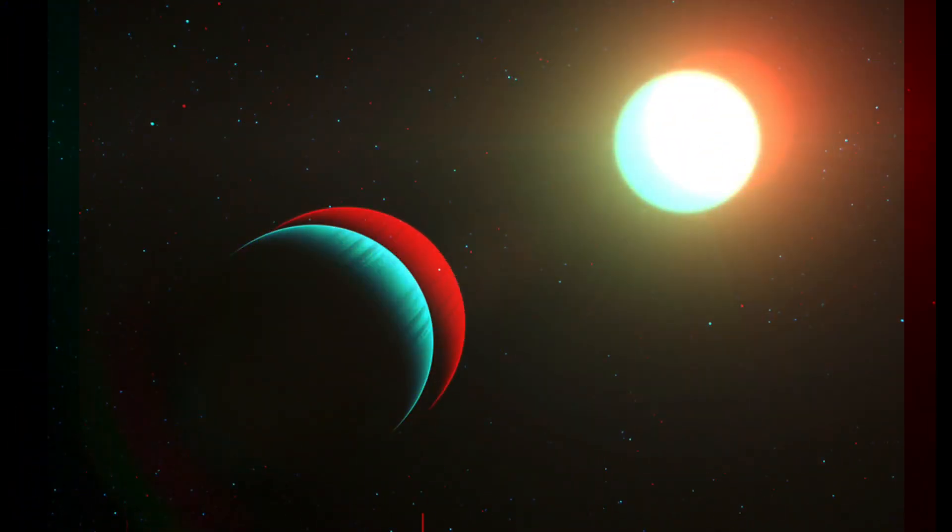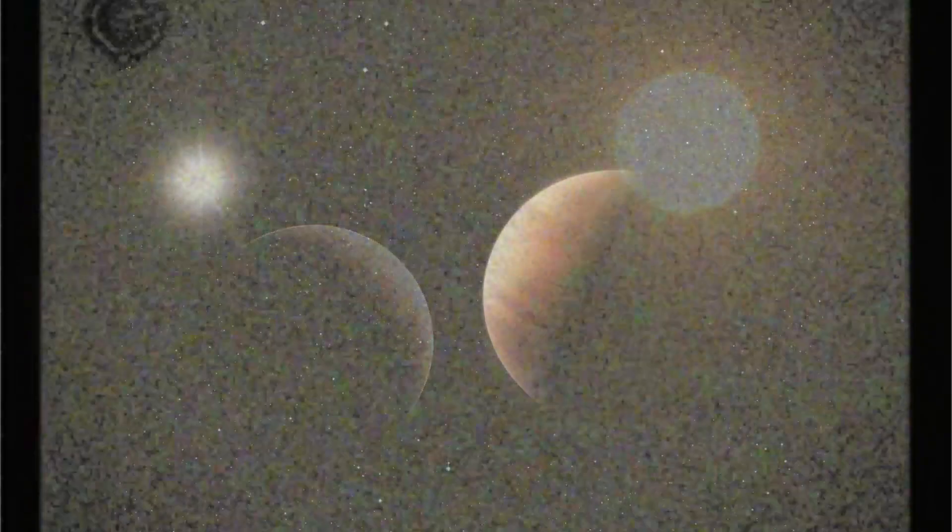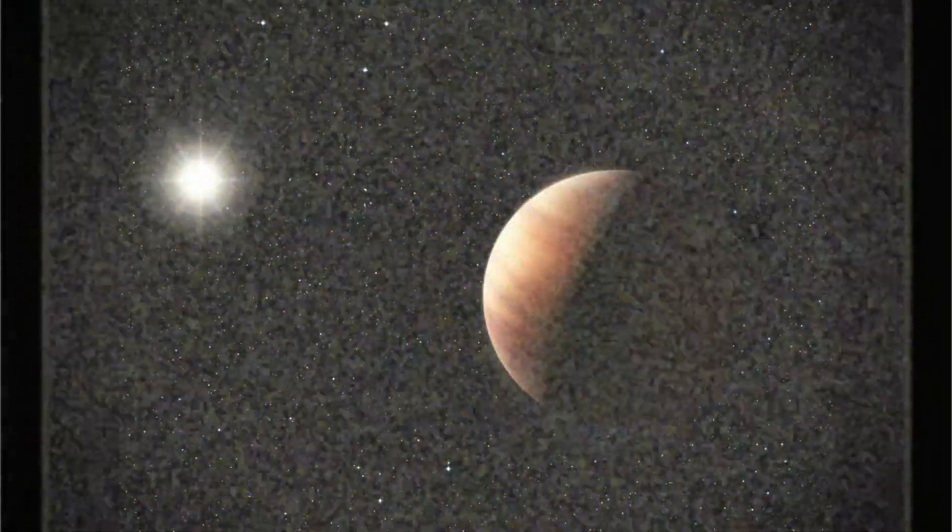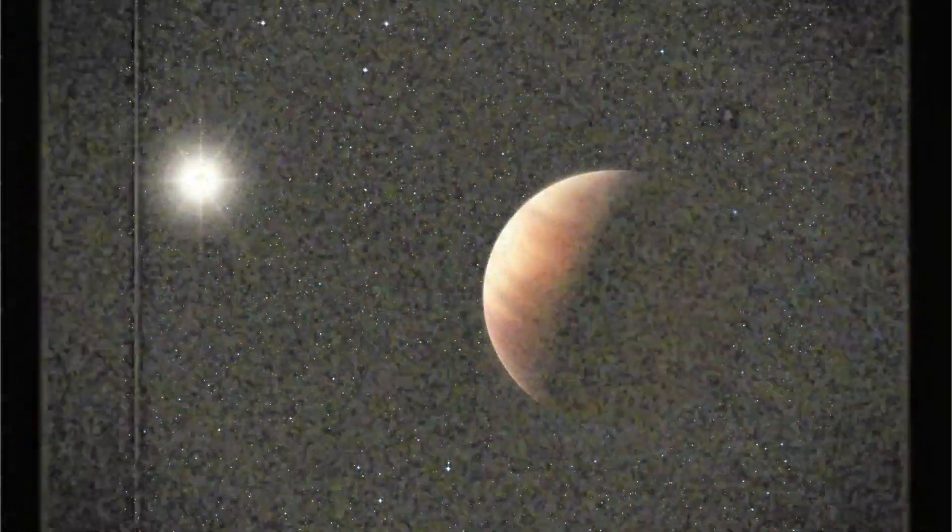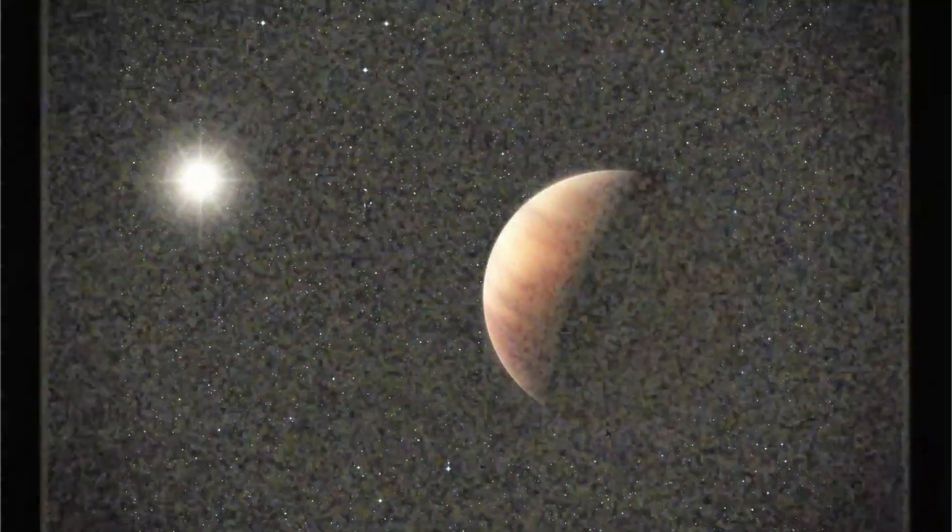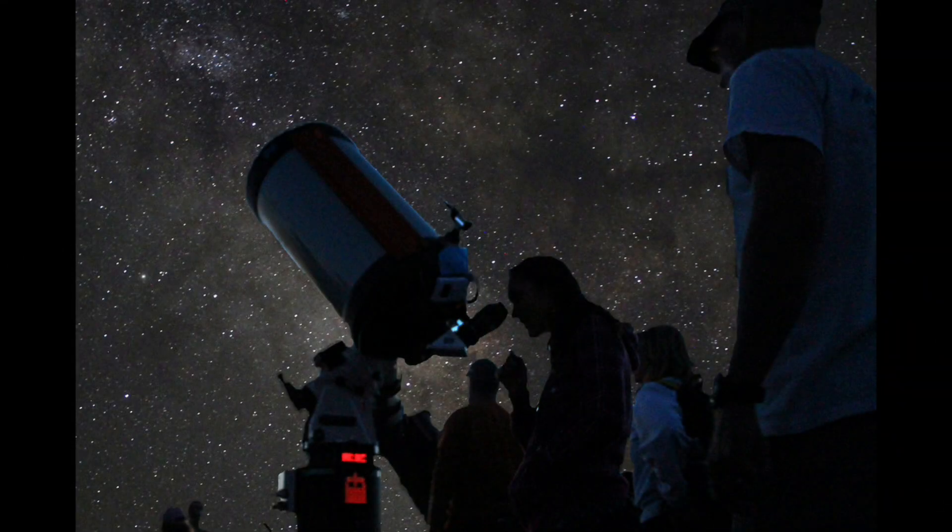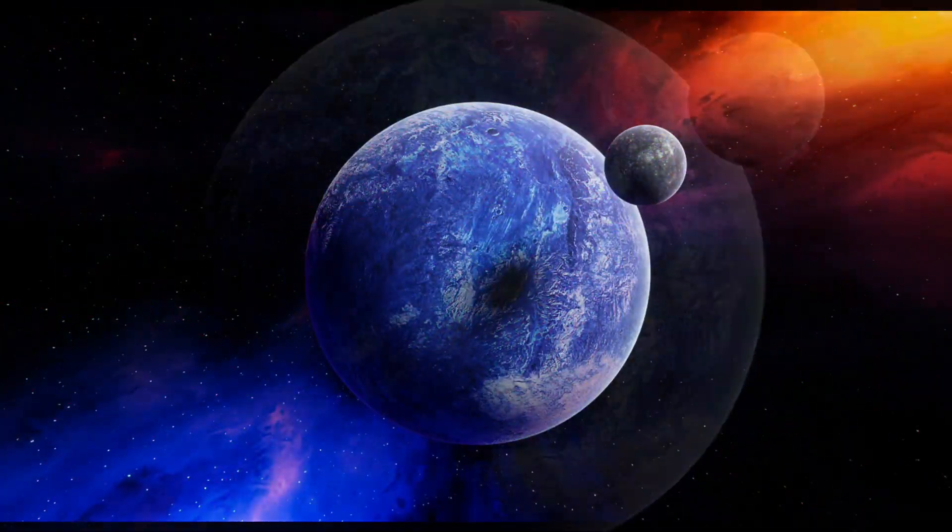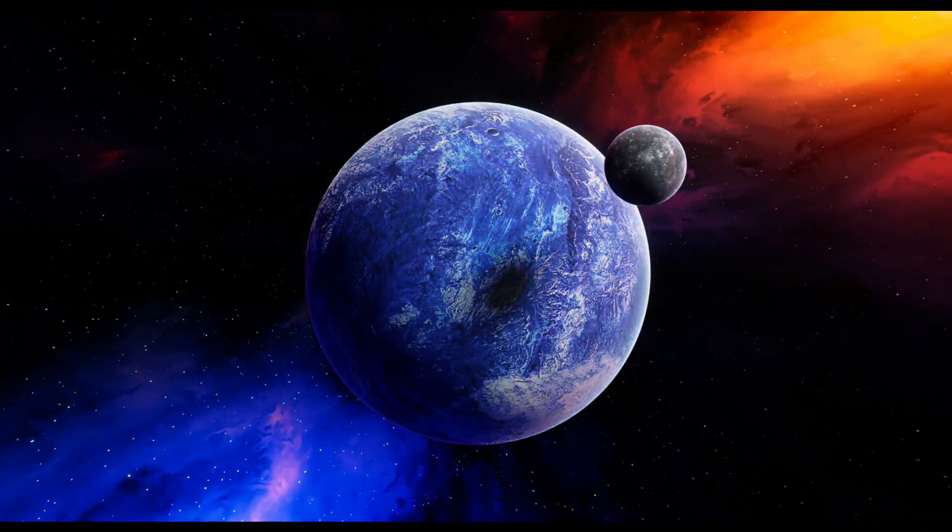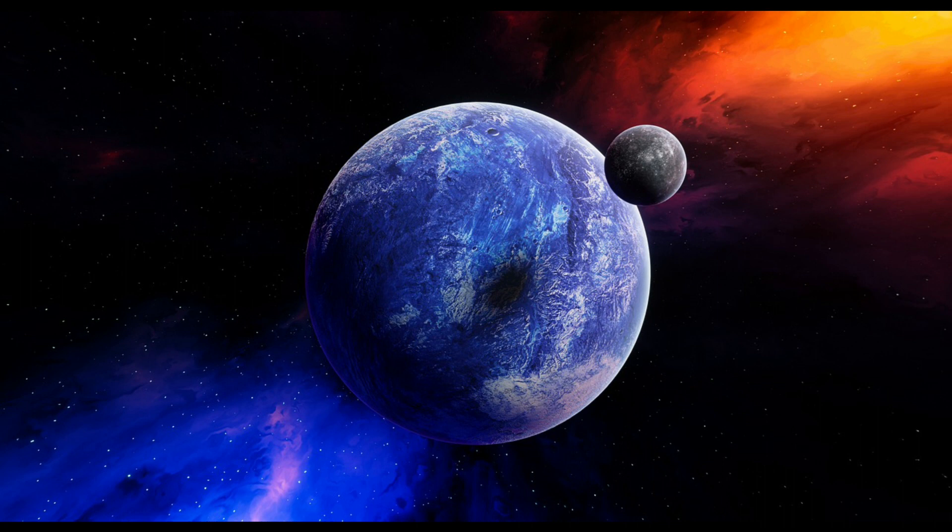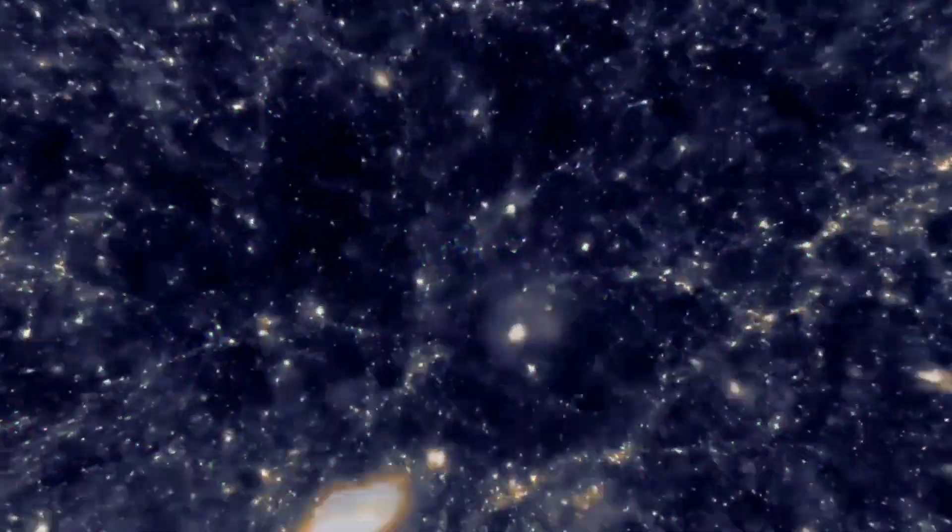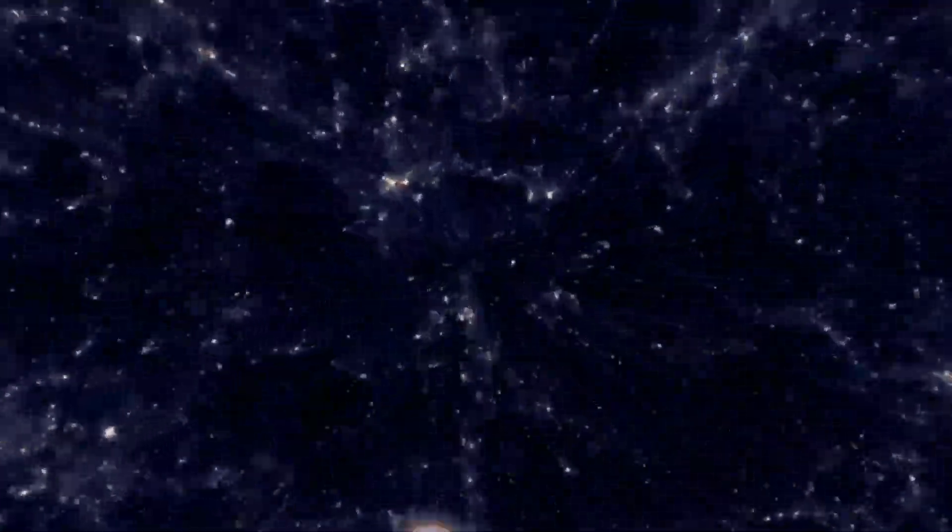Alright, first on the list is the discovery of the first exoplanet. Until 1995, we had no evidence that planets exist outside our solar system. Then a Swiss team of astronomers discovered a planet orbiting a star in a constellation. This discovery opened up a whole new field of astronomy and changed our understanding of the universe forever.